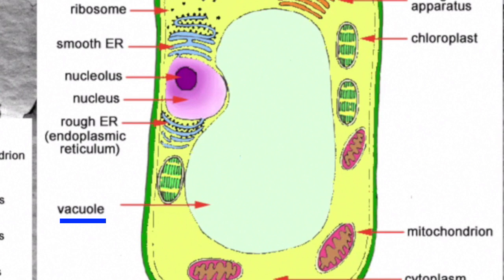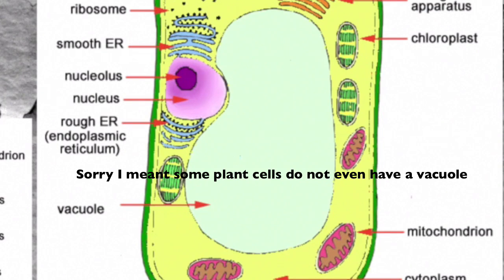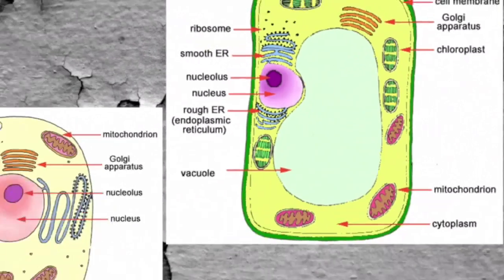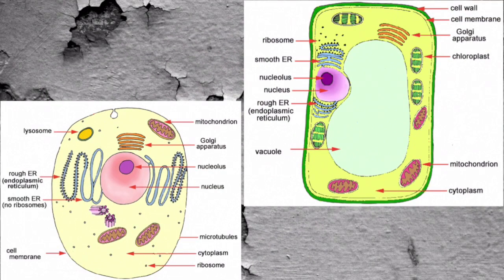Vacuole structure is very large. It is very large in plant cells and tiny in animal cells. Some animal cells do not even have a vacuole. The function is to store substances that are used by the cell, mostly water. These organelles named are found in both a plant cell and an animal cell.